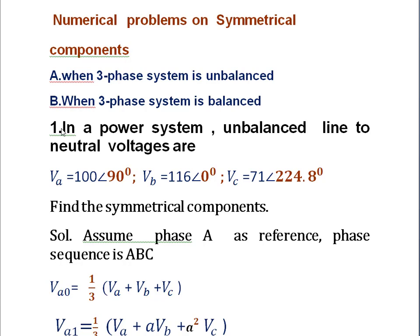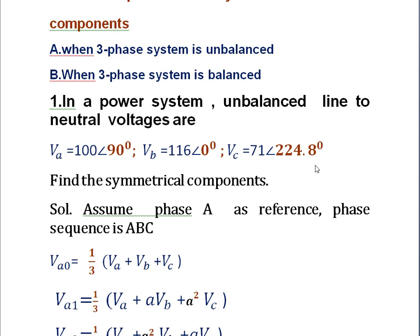Let me take a problem now — an unbalanced system. In a power system, three-phase unbalanced system, line-to-neutral voltages are given as: Va = 100∠90°, Vb = 116∠0°, Vc = 71∠224.8°. Find the symmetrical components. If you look at these voltages, the magnitudes of Va, Vb, and Vc are different, and the phase angles between Va and Vb, and Vb and Vc are different — there is no symmetry of angle between these vectors. So it is an unbalanced system.